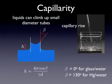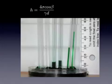And then that's all divided by gamma of the fluid, and d, the diameter of the tube. So what you can see is the height of the capillary rise is inversely proportional to the diameter of the tube that you're using. So the thinner the tube, the higher the height you can get.